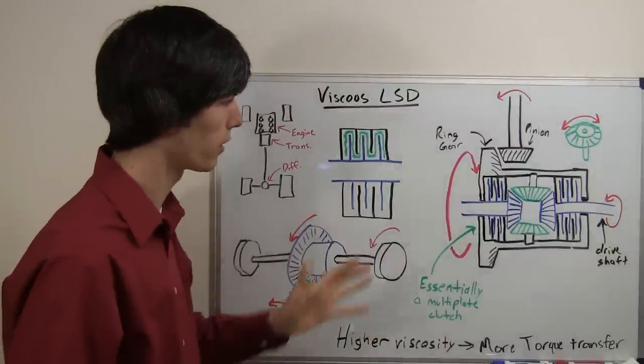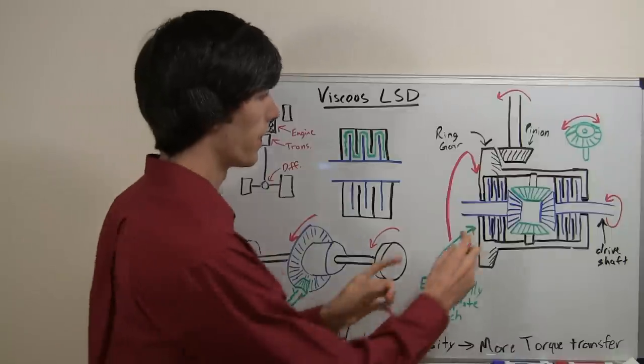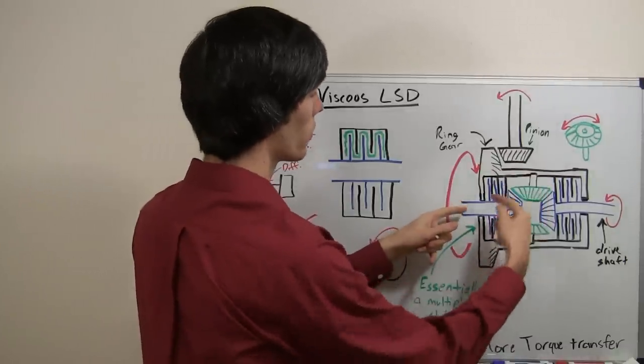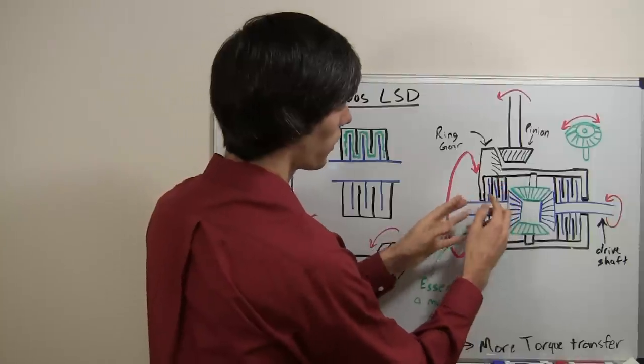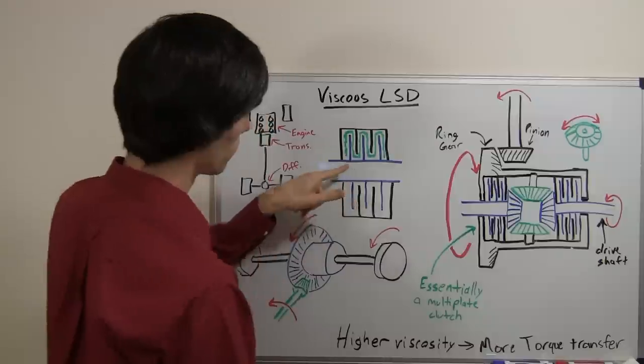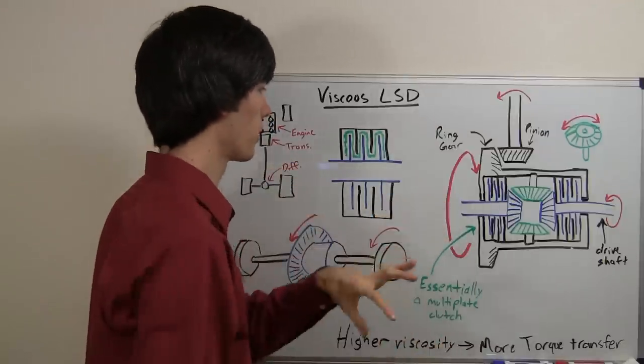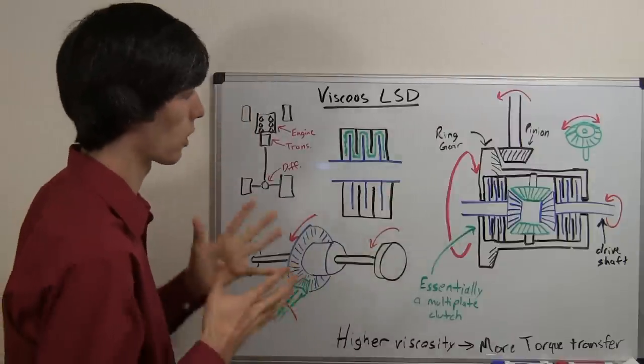Now if you put something very thick in there like tar or if you just sealed it up, then when you try and rotate, it's going to be so thick that it's not going to allow this drive shaft to rotate at a different speed. So it will force it to move at the same speed as it or close to it.